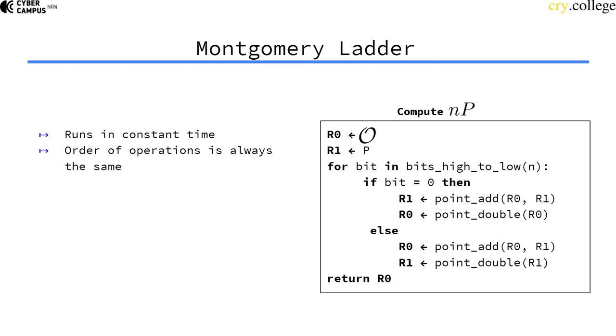The only difference between those two branches is, in one case, the result is stored first in R1 and then R0, and in the other case, it's the other way around. So the operations are always the same, just the destination is different. We'll see an example of a usage of the Montgomery Ladder in a later video.